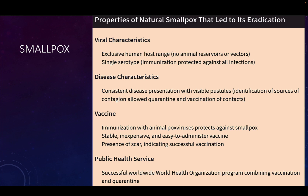Smallpox only infects humans — there are no animal reservoirs or vectors, so it is a human-to-human disease. Another interesting feature is that there is only one serotype. Unlike COVID-19 or influenza, which have many versions, smallpox has just one. Because it's not changing its outer coat, it's much easier to achieve protection through immunization. There was never going to be a new strain that could escape vaccination.